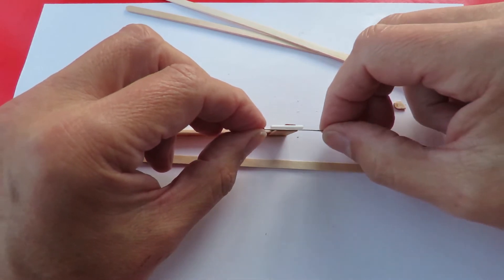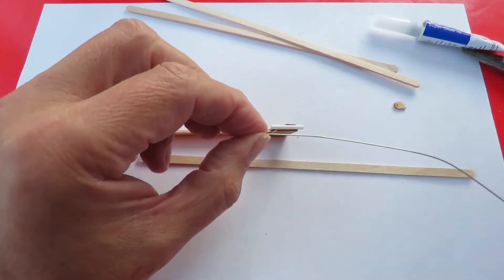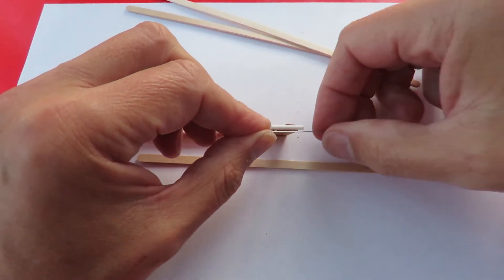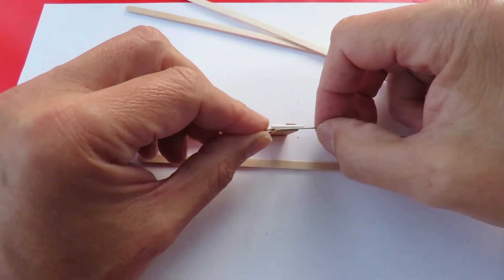So I'll cut that so it's long enough to go through there. I'll find a small bead out of my bead box here to go on the end of it to give us a thrust bearing.